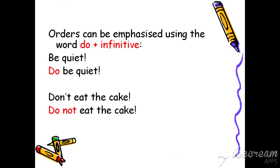Orders can be emphasized using the word 'do' with the infinitive verb. يعني لما بدي أكون جاد وأبين أهمية الموضوع، ممكن أستخدم 'do' قبل الفعل. For example: 'Be quiet' — ممكن أحكي 'Do be quiet' عشان أفرجي إنه الهدوء مهم. 'Don't eat the cake' — إذا بدي أشد عليها بحكي 'Do not eat the cake'.